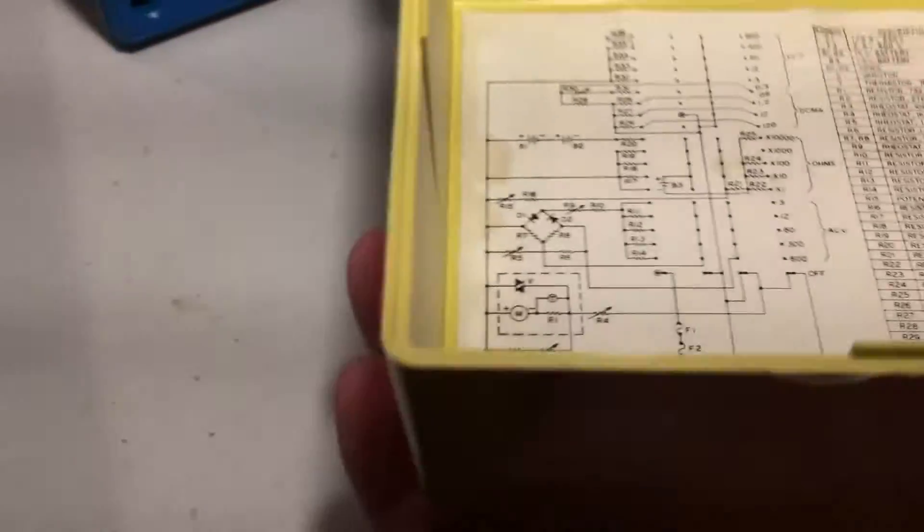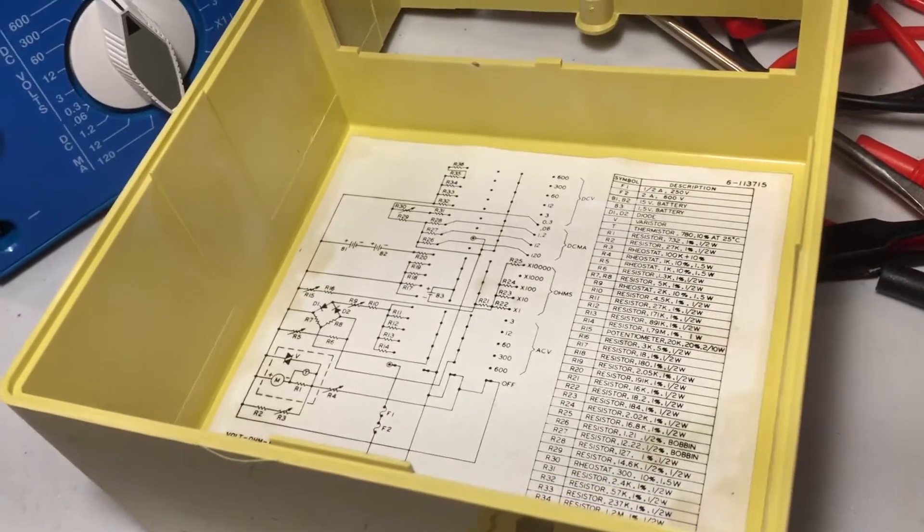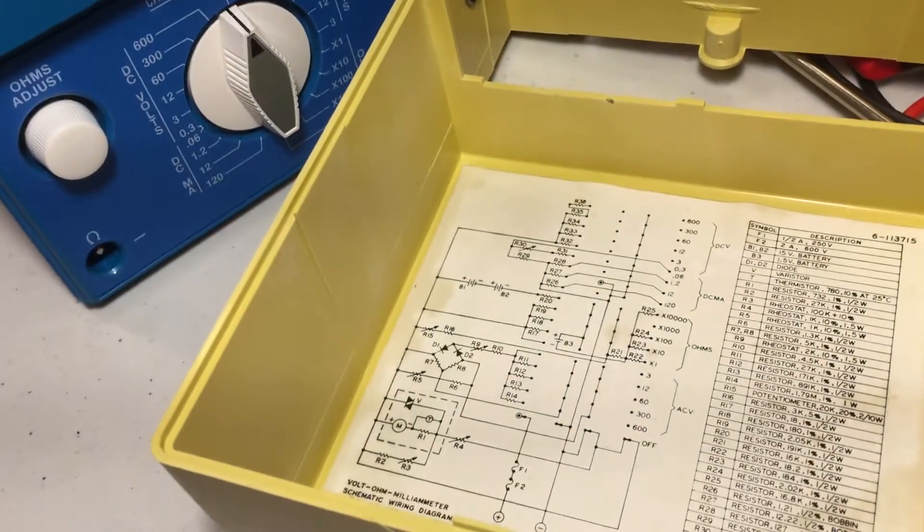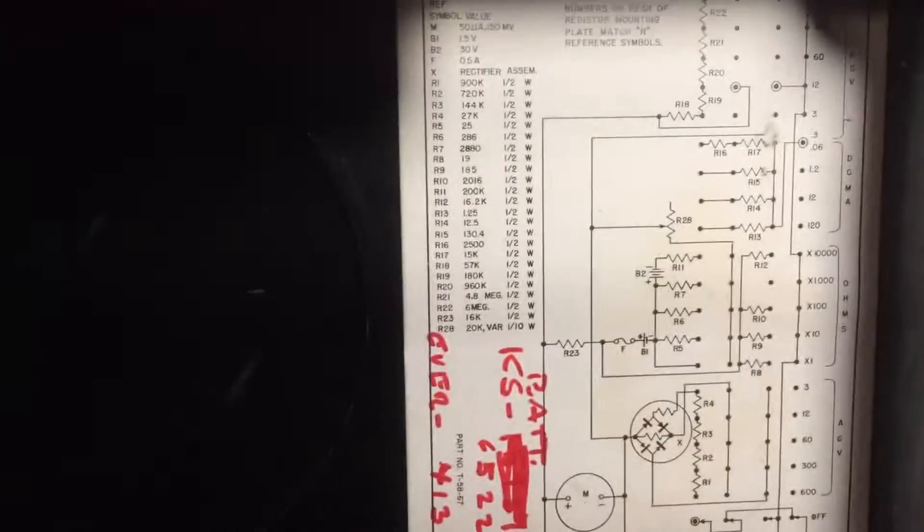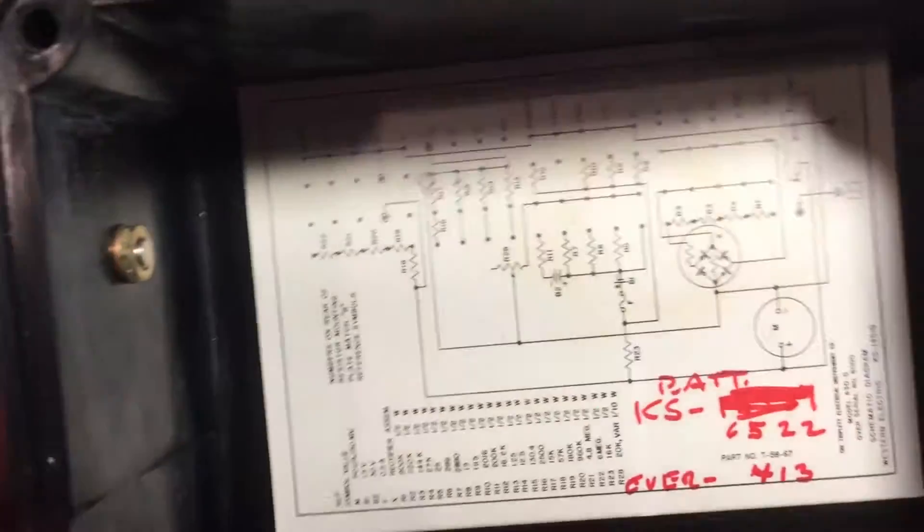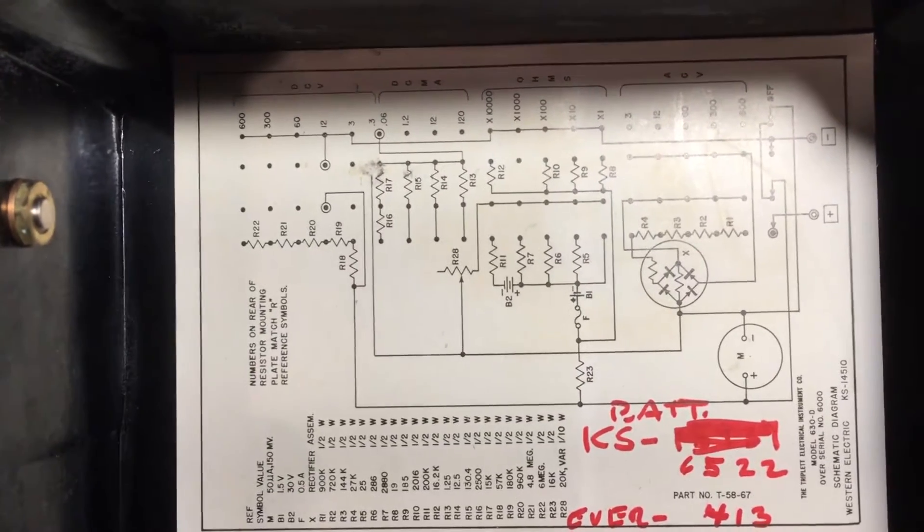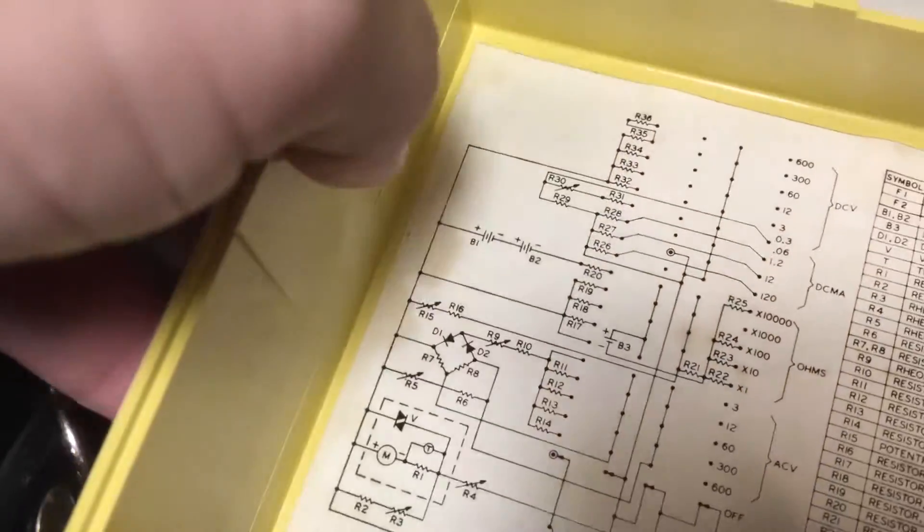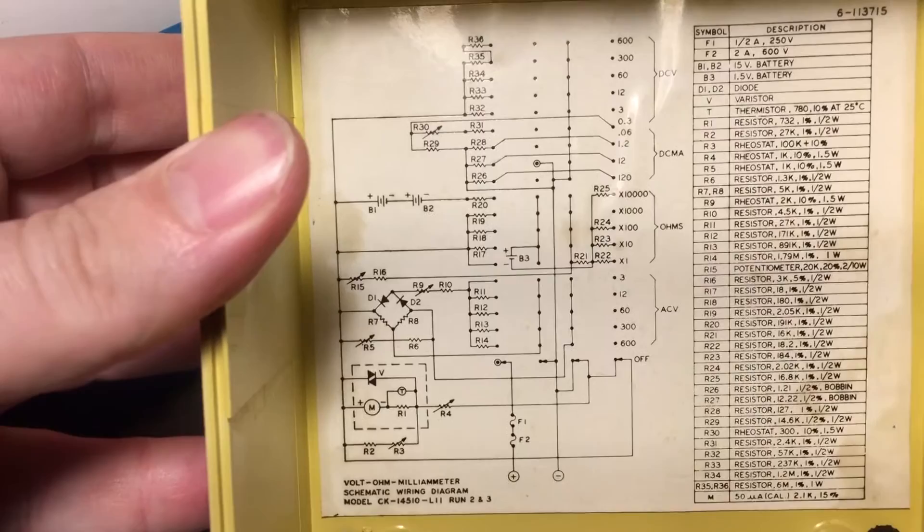Nice thing oops screws just fell out they're not captured. Nice thing about both of these meters is they both include the schematics inside the case. So if you need to replace any resistors or anything like that they are in here. I'll get a shot of these if somebody needs them. And leave a comment if you want me to take a high-res photo of these. I may just do that and post it in the comments. But here are the schematics.